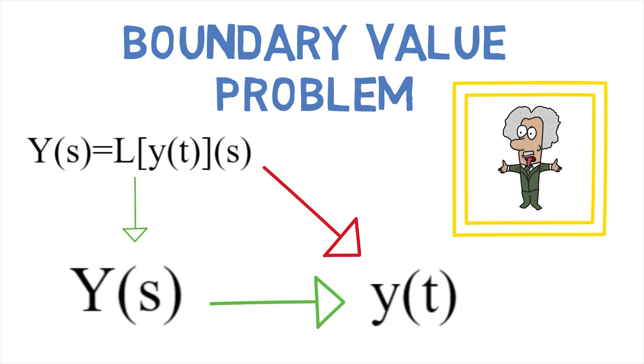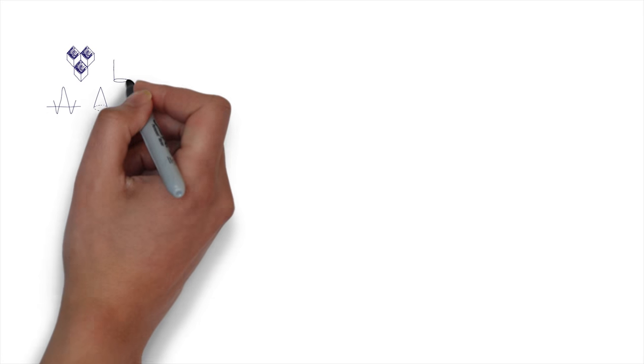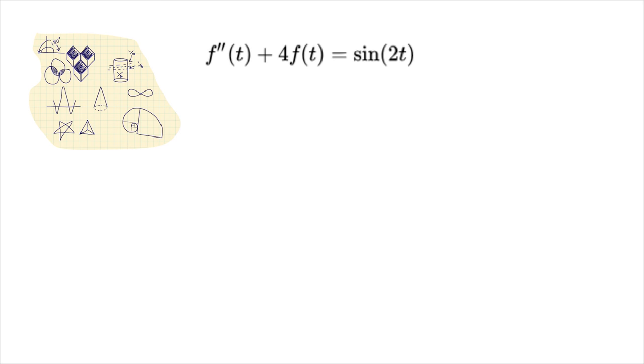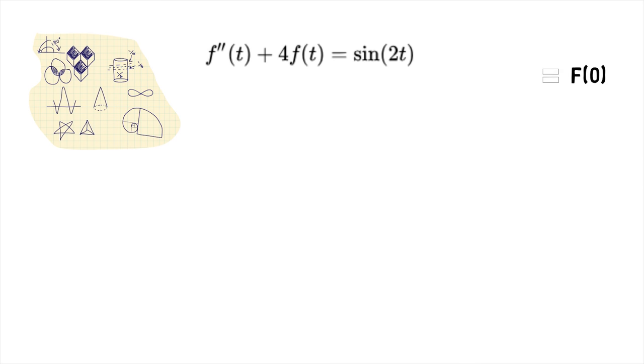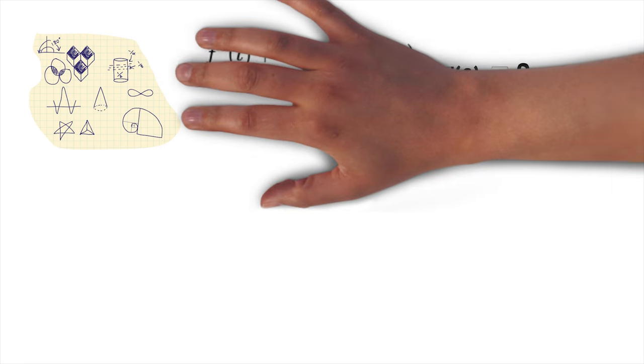It is best illustrated with an example. Consider that we want to solve the differential equation f double dash of t plus 4 into f of t equals sin of 2t, with initial conditions f of 0 equals 0 and f dash of 0 equals 0.